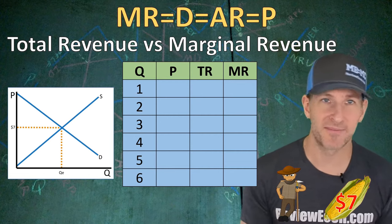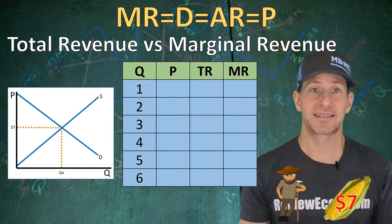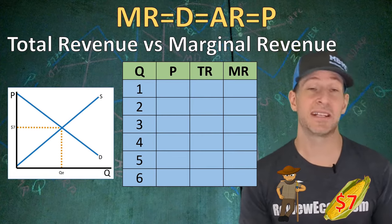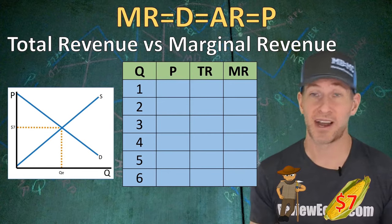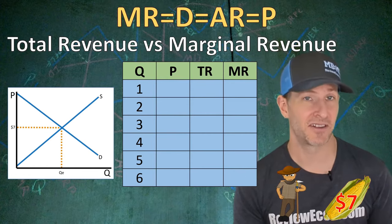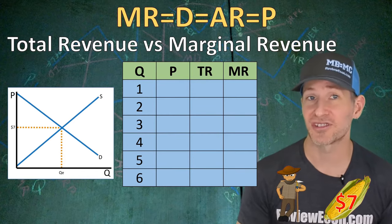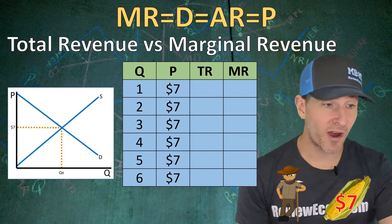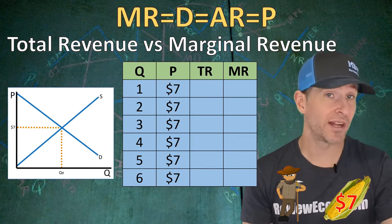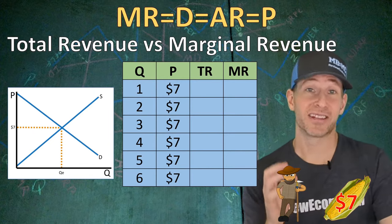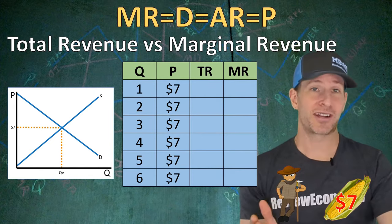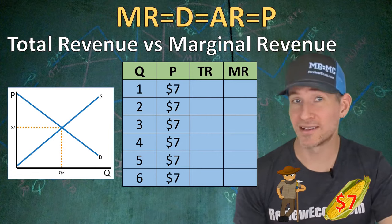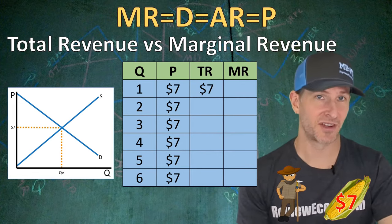Our example for a perfectly competitive market is corn. Let's say we have an individual farmer who sells corn. That farmer can't choose how much they charge — they are stuck at the market price. The equilibrium from the supply and demand graph is $7, which means each bushel of corn will sell for $7. We're going to fill out this table: the price for every quantity of output this firm can produce is going to be that market $7. Next, we fill in total revenue. Total revenue is price times quantity. At one unit of output, total revenue is 1 × $7 = $7.